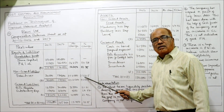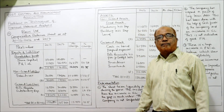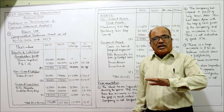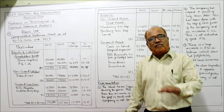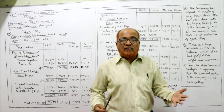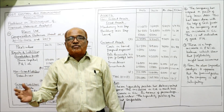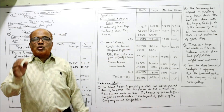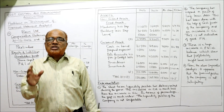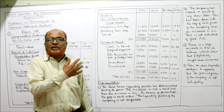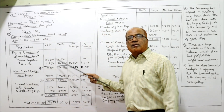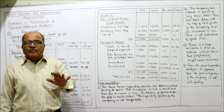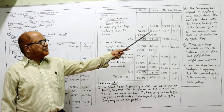Since there is no increase in long-term funds but there is an increase in fixed assets, this indicates the fixed assets were purchased from current liabilities — which is not a prudent financial management policy. Fixed assets should never be financed from current liabilities but always from long-term funds. The business is not following a prudent financial management policy in this regard.